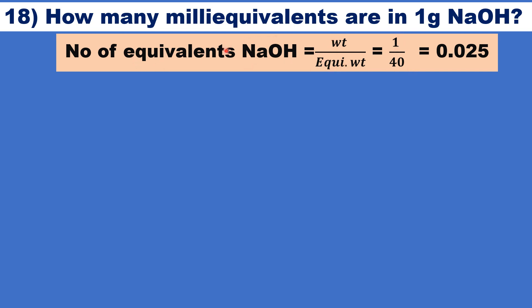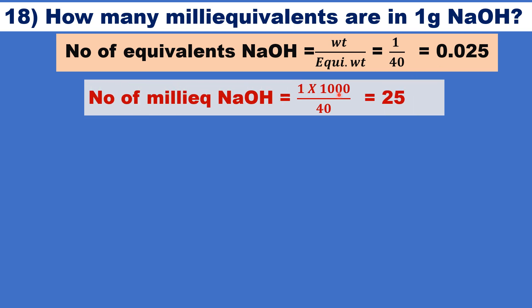1 by 40. Equivalent weight of sodium hydroxide is equal to 40. Therefore, 0.025. This is number of equivalents. It is to be converted into number of milliequivalents by multiplying by 1000. That is 1 by 40 into 1000 gives 25. So, 25 is the number of milliequivalents of sodium hydroxide present in 1 gram of sodium hydroxide.